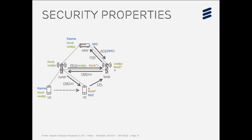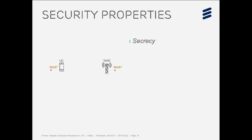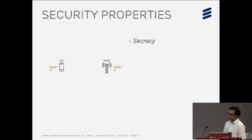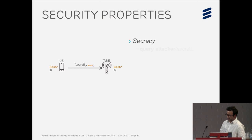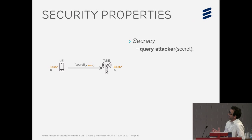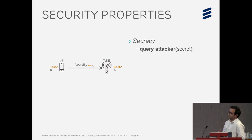For secrecy, the goal of this handover procedure is to establish Key eNodeB star and agree on a capability. We add an extra step where we send a secret encrypted with this key, then add a query in the declaration checking whether the attacker knows the secret — using the built-in attacker predicate. ProVerif negates this expression and tries to prove it. If it fails, it means it has found an attack path leading from the initial state to a state where the predicate holds.